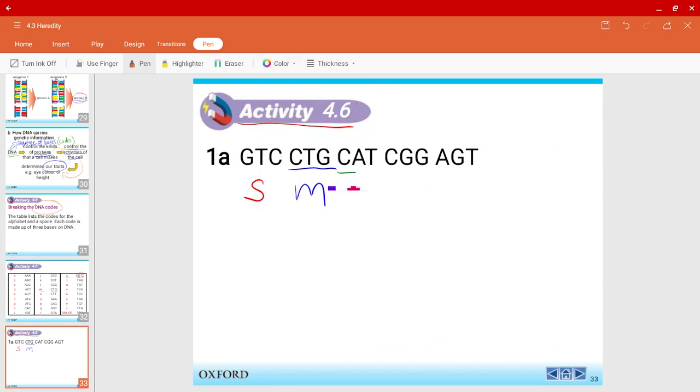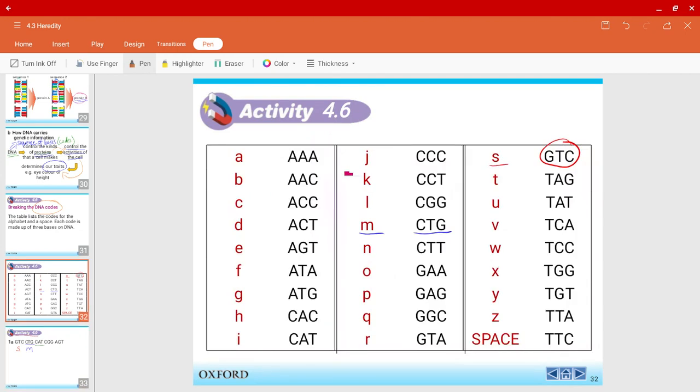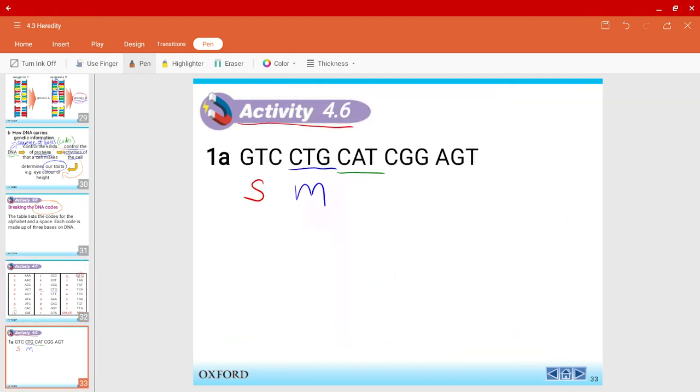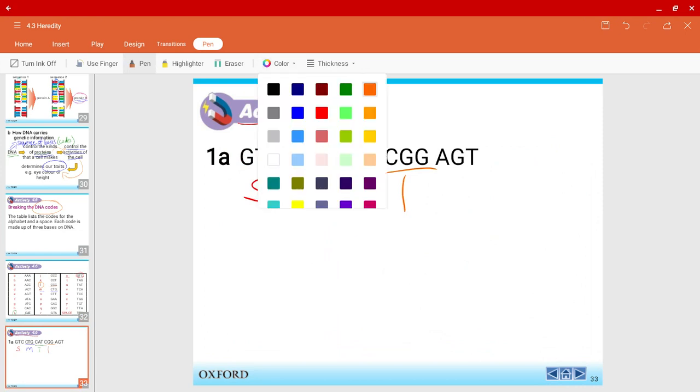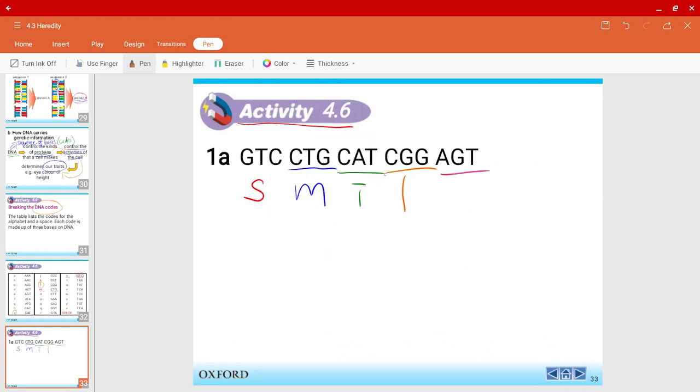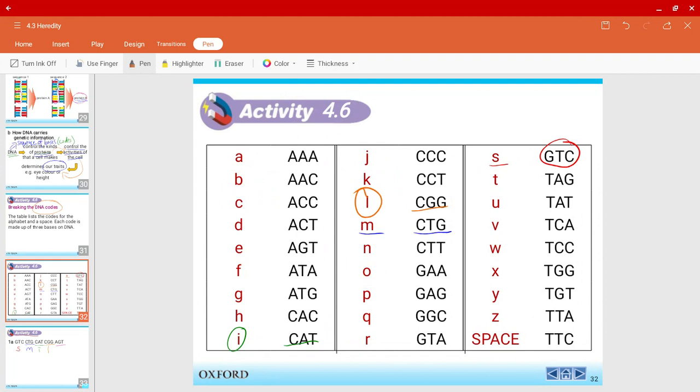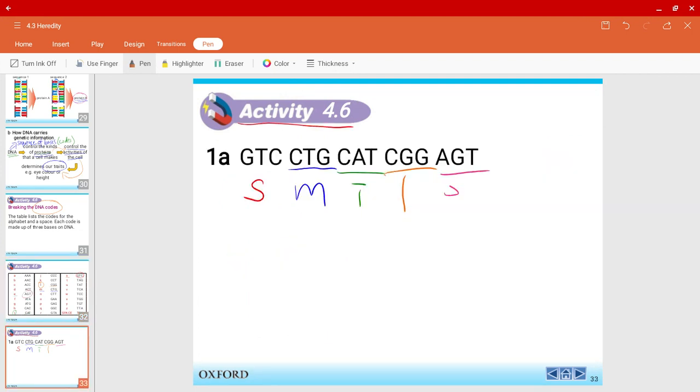All right. Next one. So, now I think you're getting the hang of it. It's CAT. So, look for CAT. Where is CAT? CAT is down here, which is the letter I. So, I'm going to go here and put the letter I. And next one, CGG. Let's see who can find it faster. It's over here. It's letter L. And finally, AGT. Over here, AGT. This is, I found it. Over here, letter E.